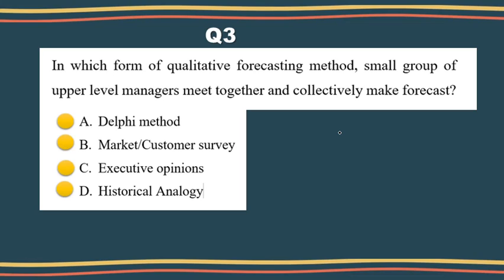In this field, we have around four basic qualitative forecasting techniques. The first one is the Delphi method. Delphi method is a narrow qualitative approach. In this method there are individuals and groups included from inside and outside of the organization during decision-making or forecasting regarding predicting the future.